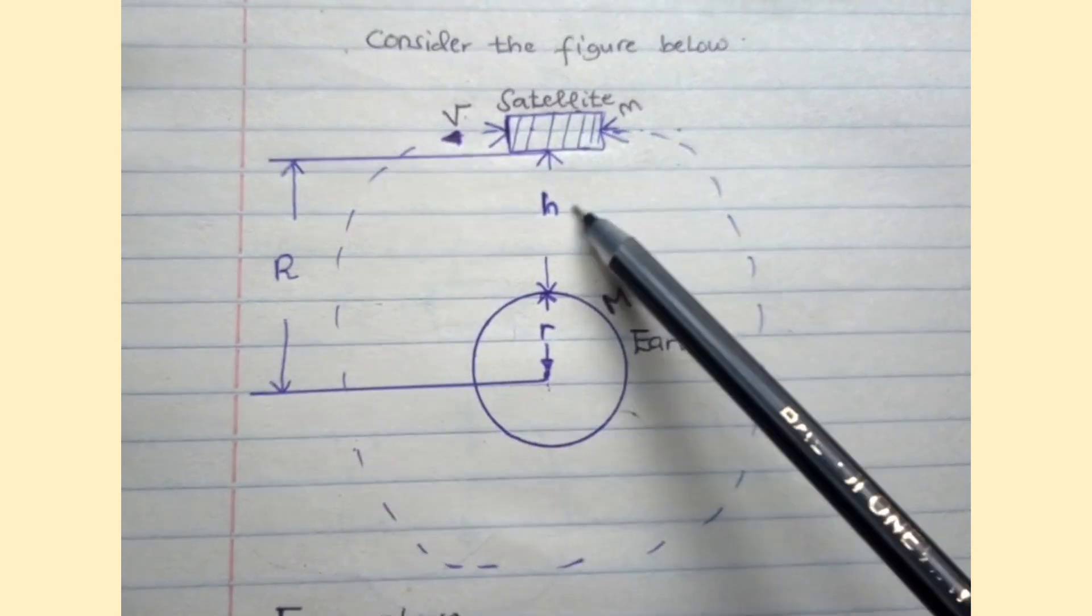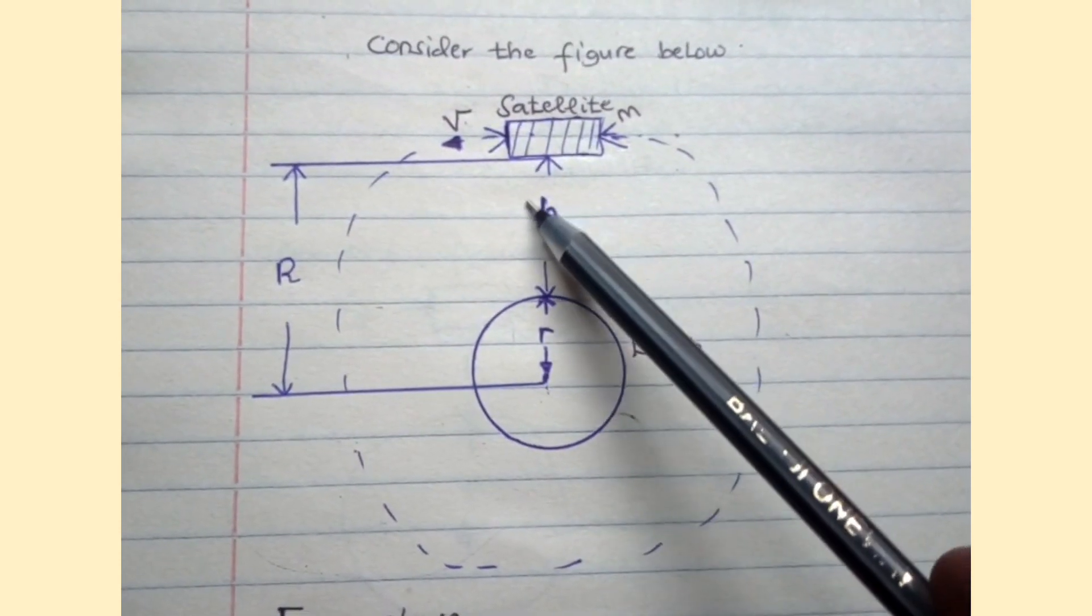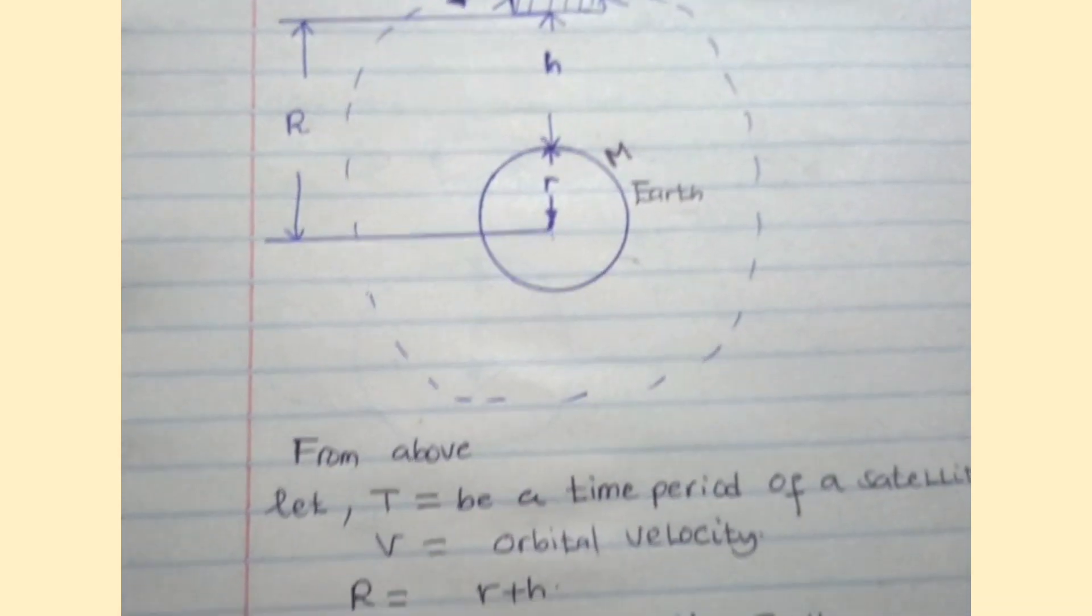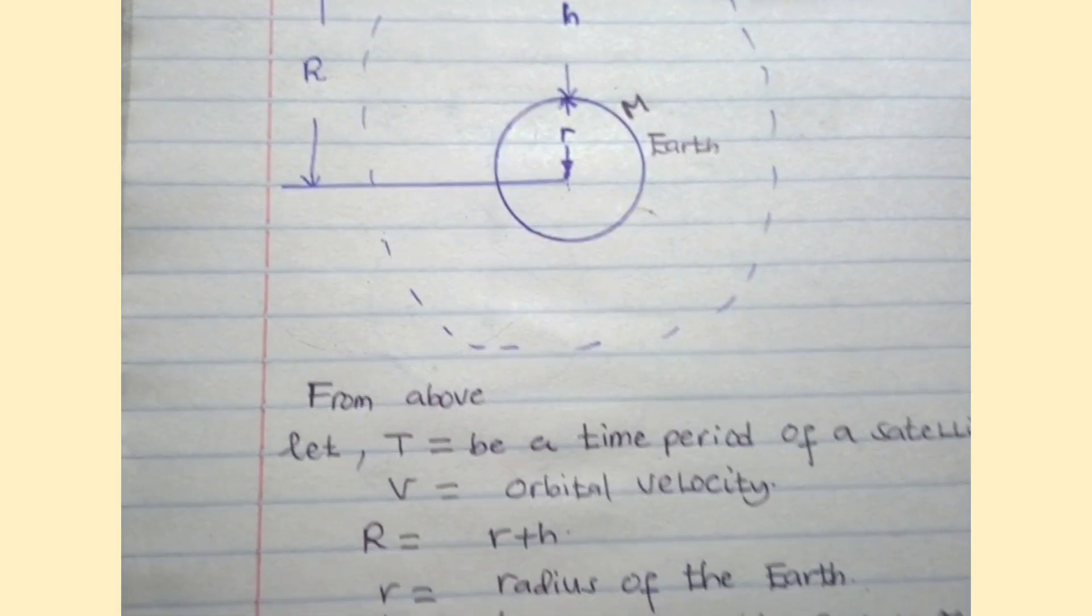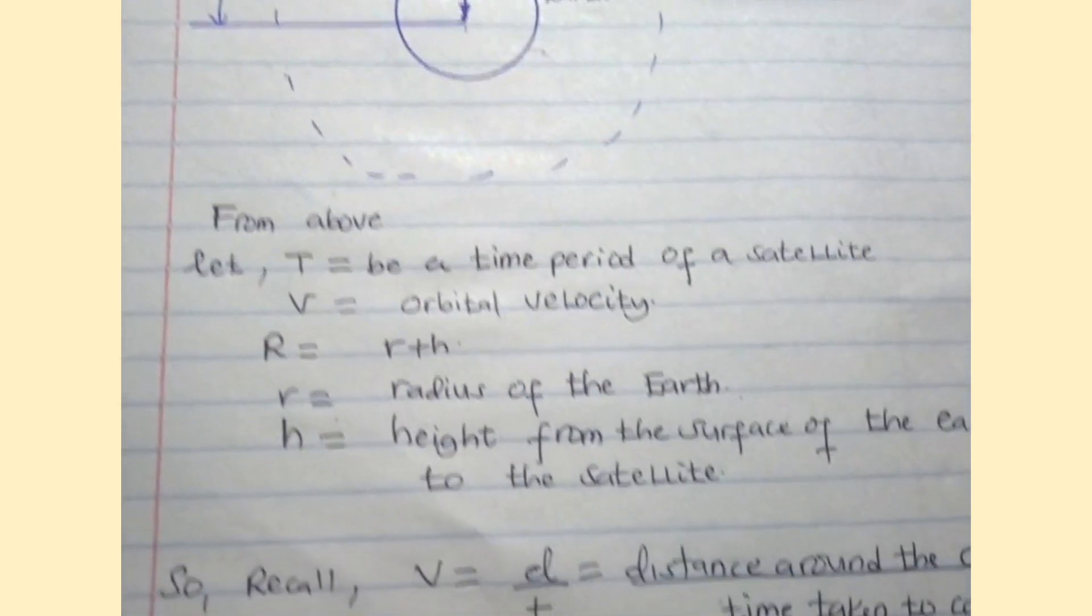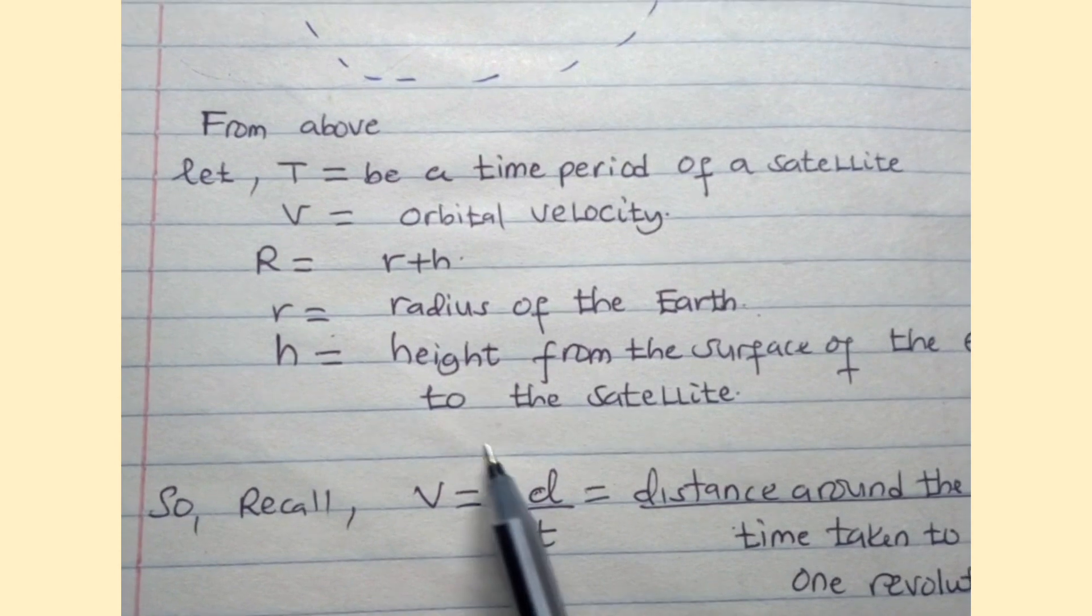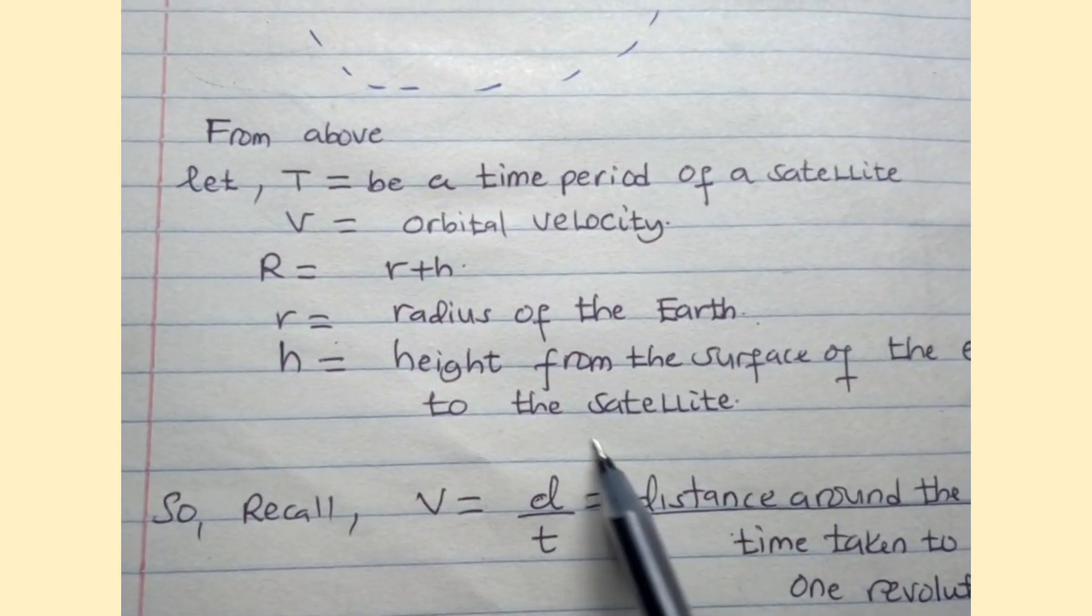In order to derive this time period, let me recall the simplest formula of velocity. This formula is given by the ratio of distance over time.